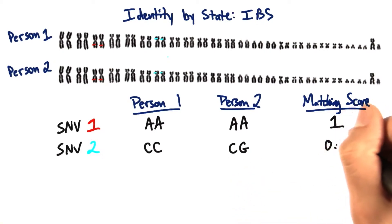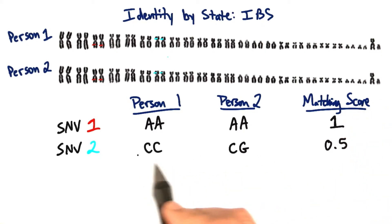So they would be assigned a matching score of 0.5, right? It's a half match. Out of the two possible letters that could match, only the Cs match.